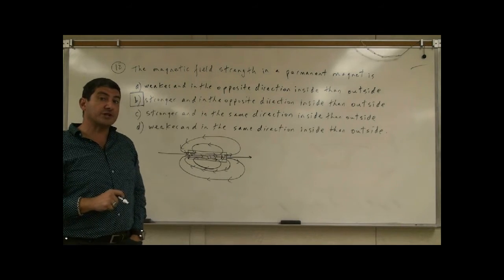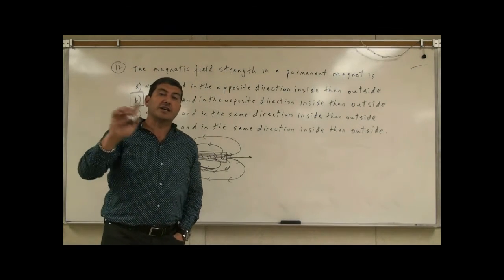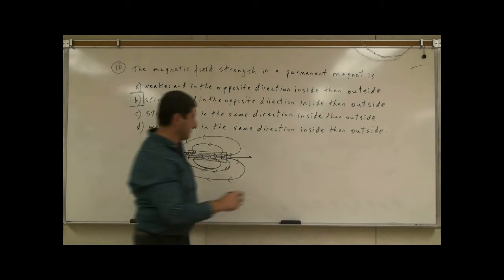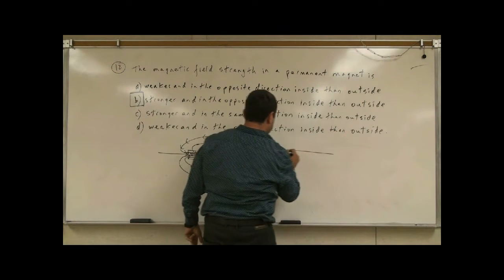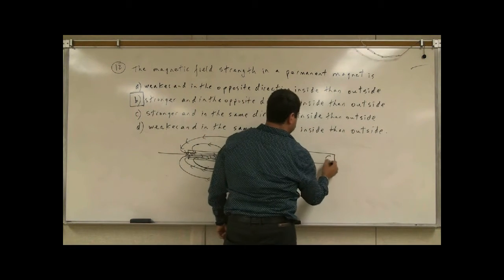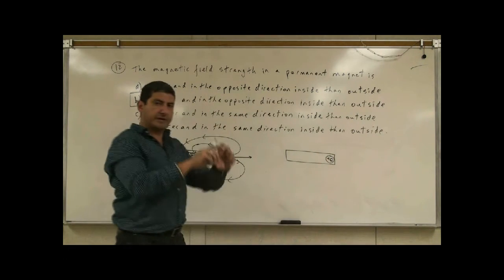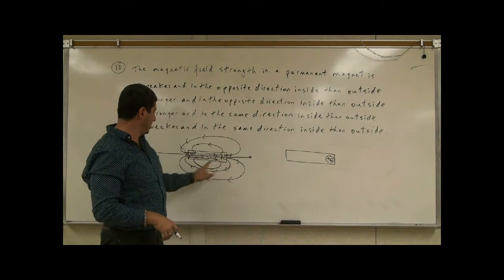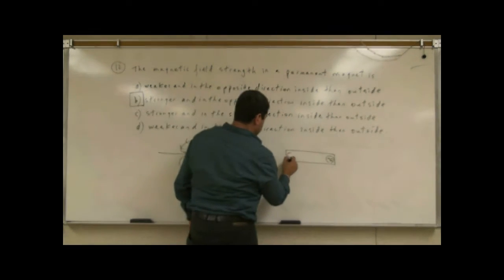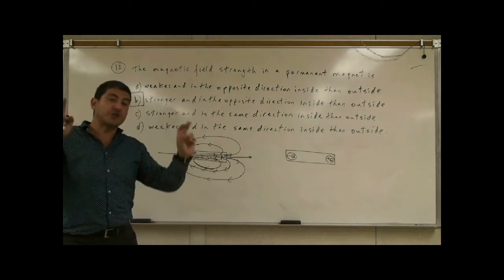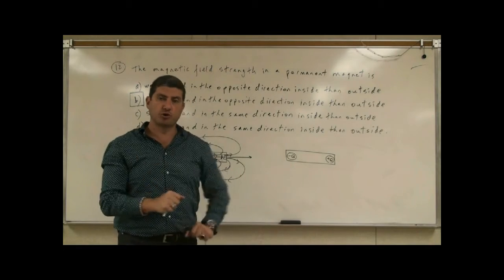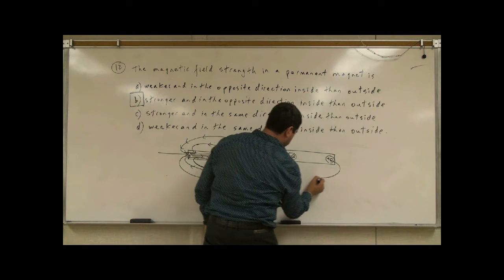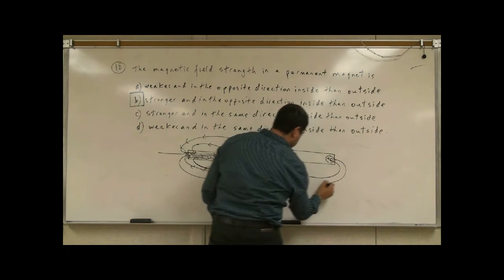Now, what if this question had asked about electric fields? What if instead of a north pole, you had a positive charge? Imagine you had some kind of chamber, and you put a positive charge on one side. The positive charge would represent the north pole, and a negative charge would represent the south pole. The electric field lines would come out of the positive charge and go into the negative — very similar looking.